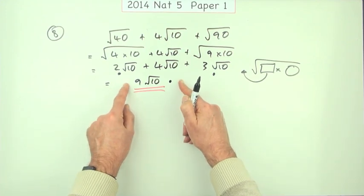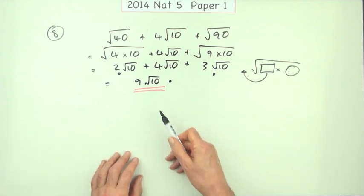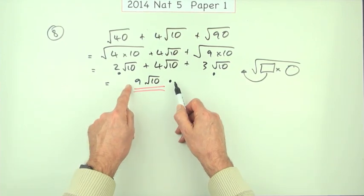Any working after a correct answer usually isn't penalized, but here's one where they would. So if you did something like get that and then say, oh that's root 90, that would then lose you the mark that you got there.